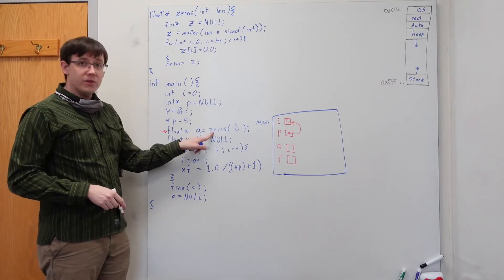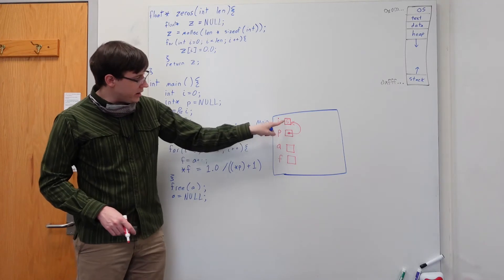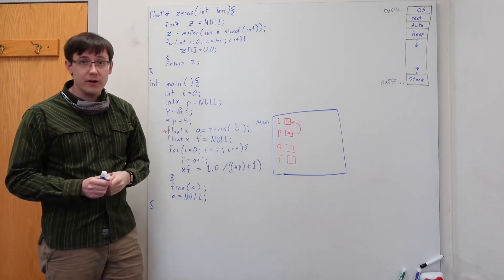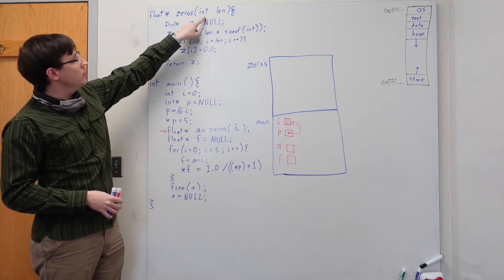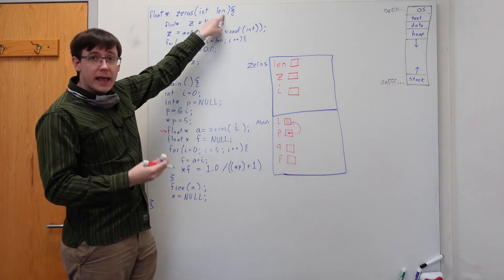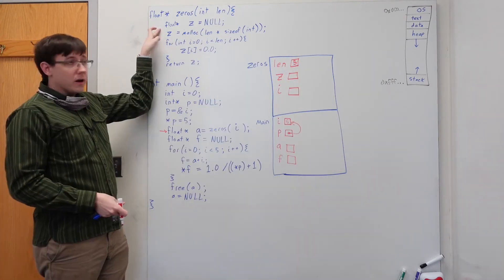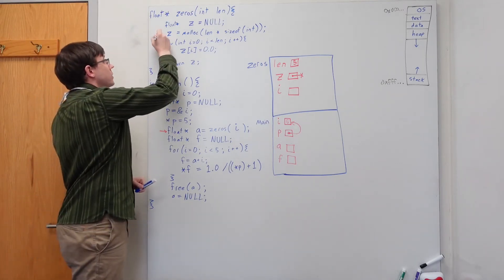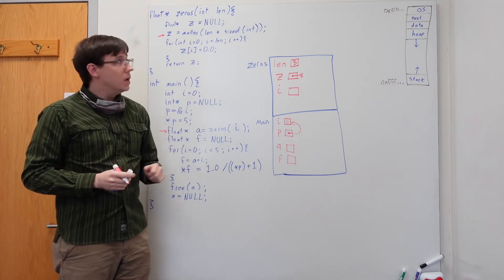Then we call our zeros function, passing in the value of i, which we just updated to 5. When we call this function, we get a new stack frame to hold all of its local variables: len, z, and i. len was the argument and we passed in 5, so it has the value 5. We initialize z to point to nothing. Then on the second line of this function, we assign into z the return value of the malloc function.